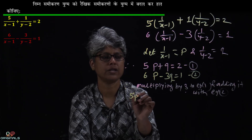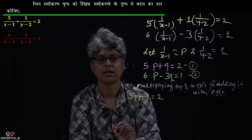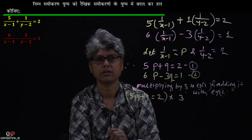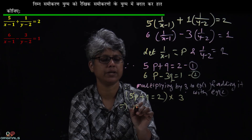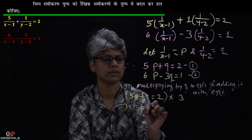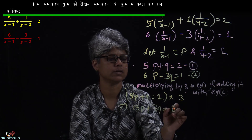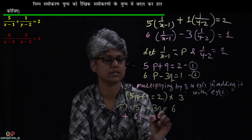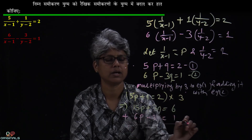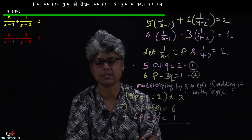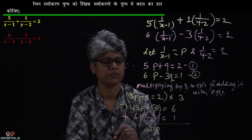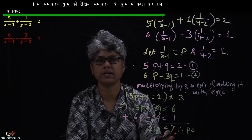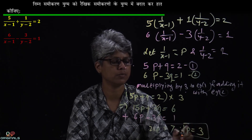So what do we get here? Equation 1, multiplied by 3: 5P + Q = 2 becomes 15P + 3Q = 6. Adding this with equation 2 as it is — 6P minus 3Q = 1 — the 3Q terms get cancelled. So we get 21P = 7, which means P = 7/21 = 1/3. So P equals 1/3.